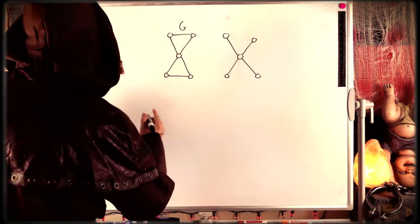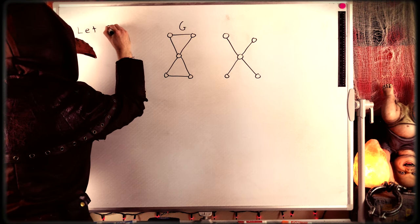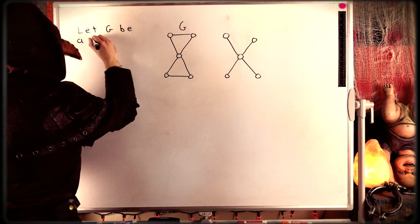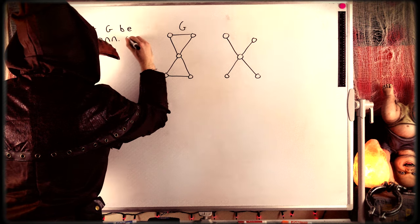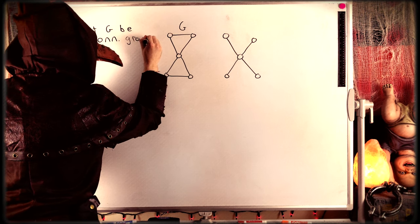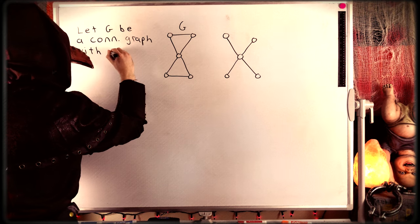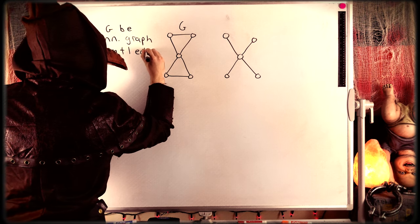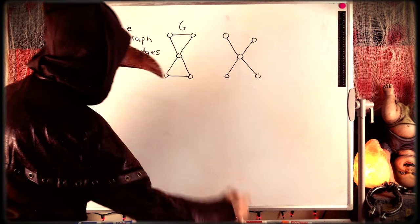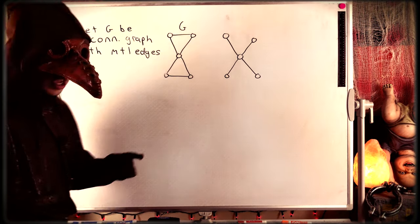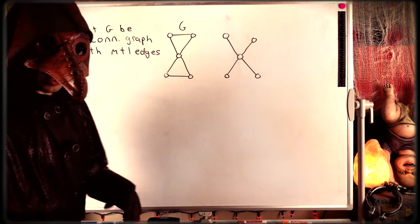As induction goes, we want to consider a connected graph G. Let G be a connected graph with m plus 1 edges. We want to show that our induction hypothesis — assuming the result for all connected graphs with m edges — forces the result to also be true for all connected graphs with m plus 1 edges.